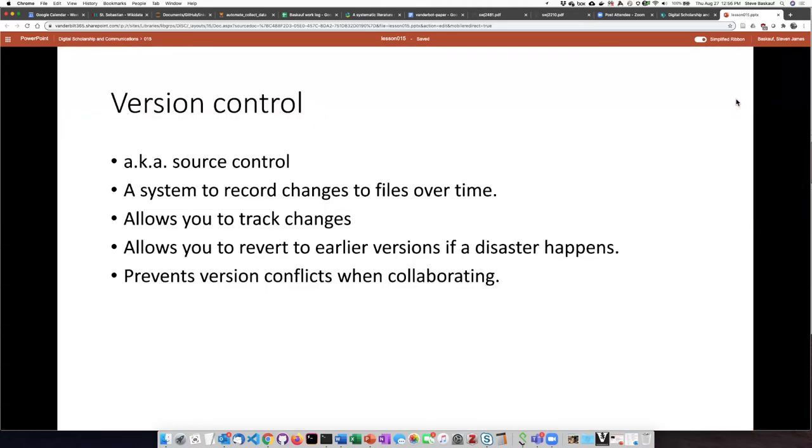Version control, also known as source control, is a system that records changes to files over time. By recording these changes it allows you to do several things.